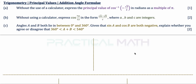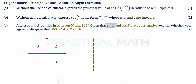In part C, angles A and B both lie between 0 and 360 degrees, meaning they can be in any of the four quadrants. Using our ASTC quadrant diagram: since sine A is negative, angle A belongs to the third and fourth quadrants, so A is in the range 180 to 360 degrees.